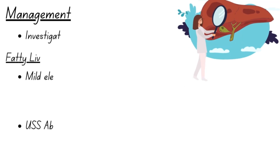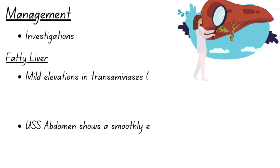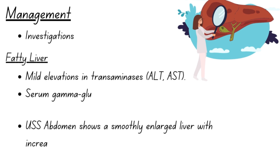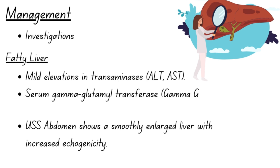Managing alcoholic liver disease requires a comprehensive approach. Diagnostic investigations are crucial for confirming the presence of alcoholic liver disease. In cases of cirrhosis, specific diagnostic procedures are outlined in a separate chapter in this video series. In fatty liver, patients typically exhibit mild elevations in transaminases, and serum gamma-GT levels may be significantly elevated due to alcohol's enzyme-inducing effects. However, isolated elevation of gamma-GT does not necessarily indicate liver damage.